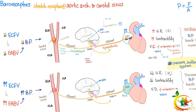Baroreceptors are pressure receptors — they respond to stretch and are found in most large vessels, especially the aortic arch and the carotid sinus. The carotid sinus is located at the bifurcation of the common carotid artery into the internal and external carotid arteries — there is an enlargement at the beginning of the external carotid artery called the carotid sinus. Nearby is the carotid body, which is close to but not the same as the carotid sinus.